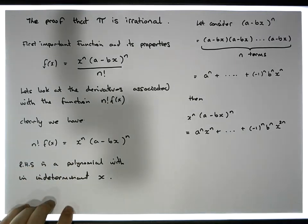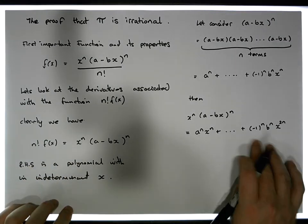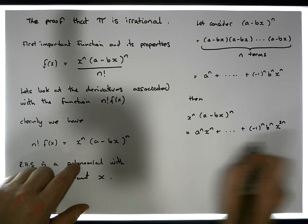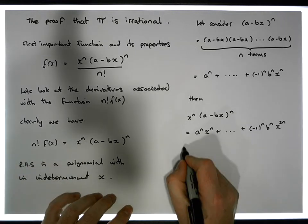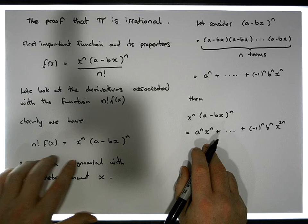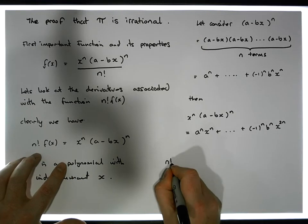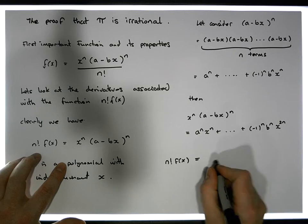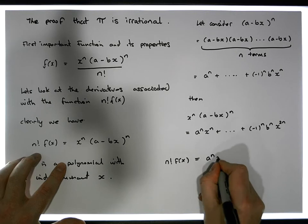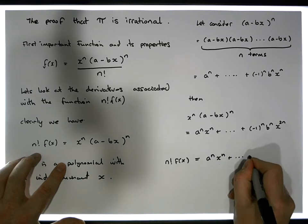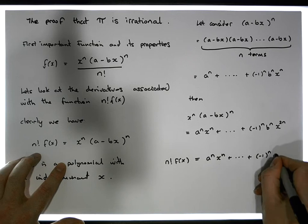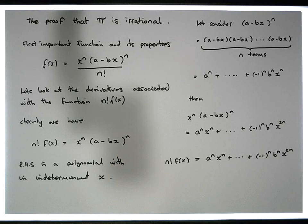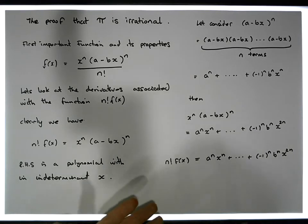This is what this particular polynomial will actually look like, and it's an important polynomial for us. What we're saying is that n factorial times f(x) is equal to this polynomial — from a to the n times x to the n, all the way down to minus one to the n times b to the n times x to the 2n.